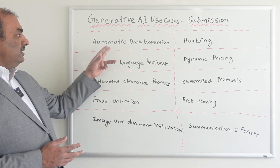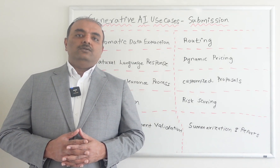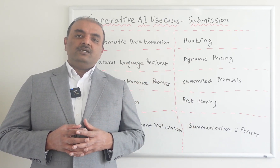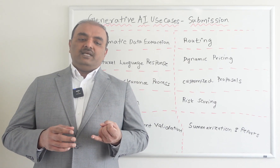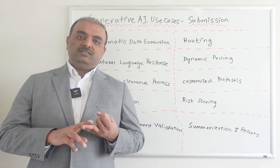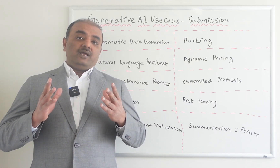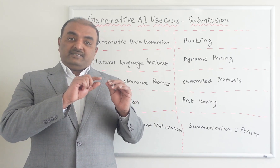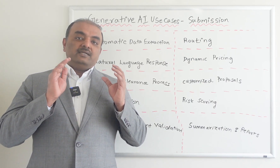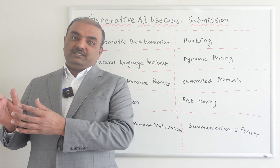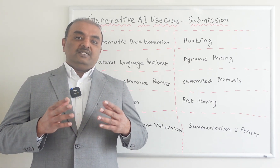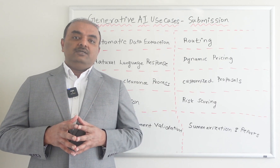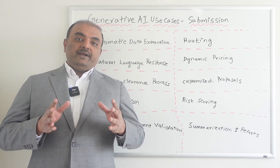The first one is automatic data extraction. Most of us know when you get the submission information from the customer or the broker, you are going to have n number of documents like statement of values and their loss history etc. What Generative AI can do is it can look at the critical information within the document, extract it, and also enter that data automatically into any policy administration system through the use of natural language processing. The benefit here is this is going to eliminate the manual work and it is going to avoid some clerical errors.